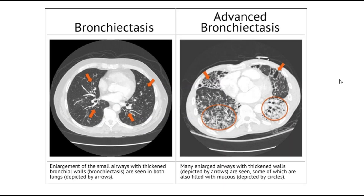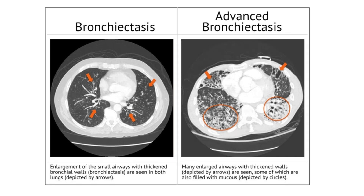Here is bronchiectasis on CT scan. The CT will show enlargement of the small airways with thickened bronchial walls. In advanced bronchiectasis, you will see many enlarged airways with thickened walls, and some will also be filled with mucus.